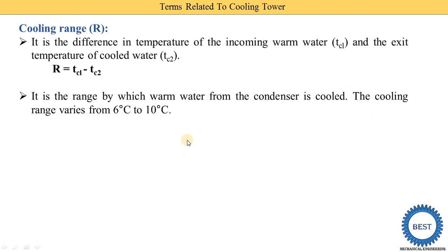The cooling range varies from 6 to 10 degrees centigrade. For example, suppose the inlet temperature of the warm water is 50 degrees centigrade. With R ranging from 6 to 10, the outlet temperature of the cold water we achieve is 40 to 44 degrees centigrade, depending upon the atmospheric conditions.